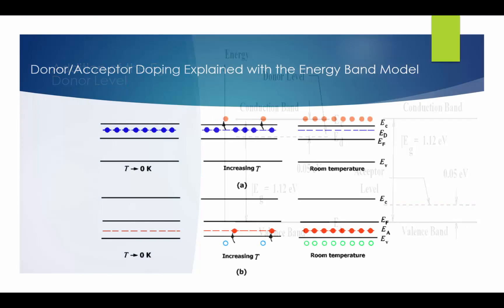This picture shows energy band dynamics at different temperatures. The top part A shows donor doping energy band model. The bottom B shows acceptor doping energy band model. At absolutely zero temperature, there are no thermal energies available, so the donor electrons all stay at the donor level, and there are no electrons at acceptor level.